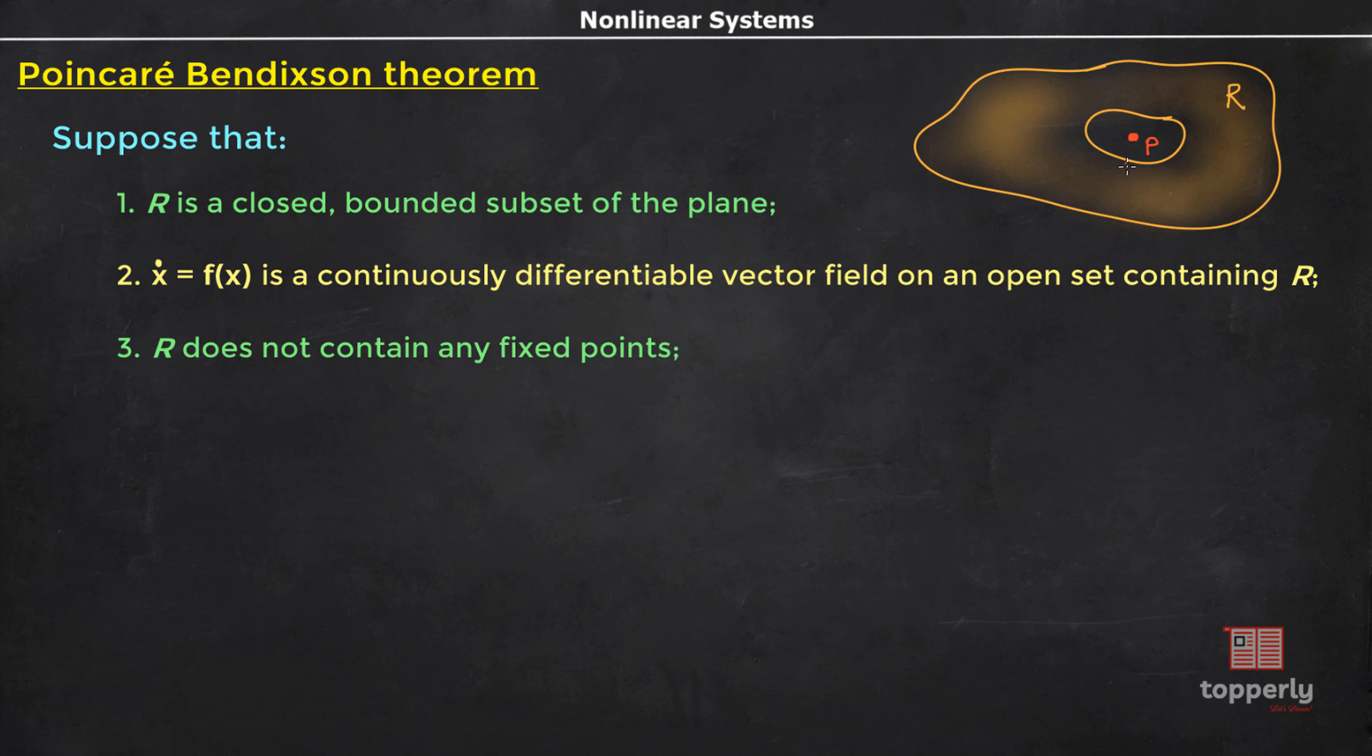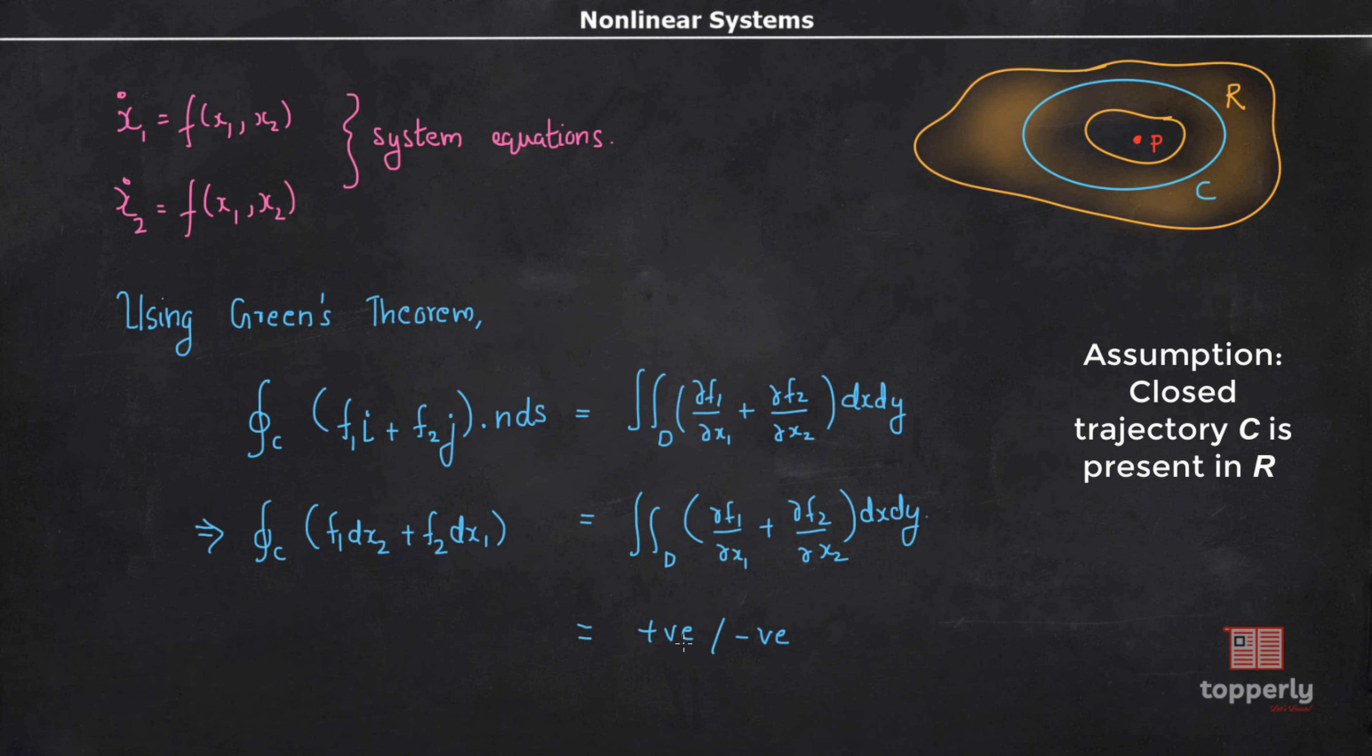By hypothesis, the integral on the right hand side is continuous and therefore can never be zero in R. Thus it is either always positive or always negative. Therefore, RHS of this equation is either always positive or always negative. On the other hand, the left hand side of this equation must be zero.